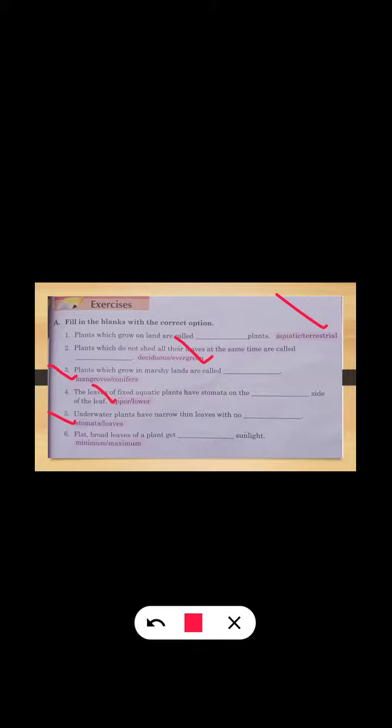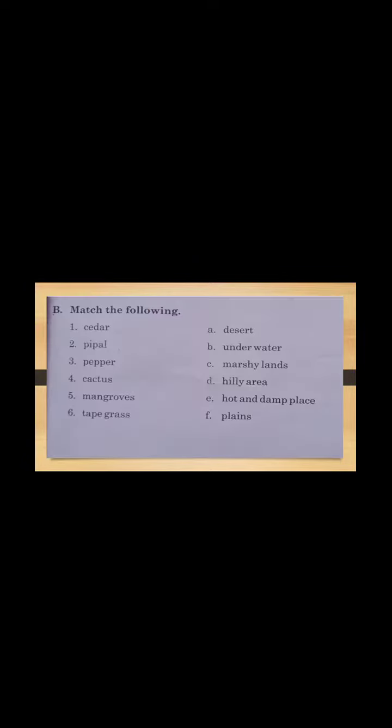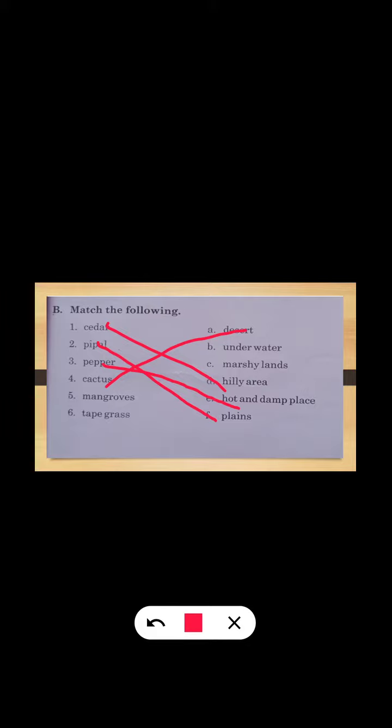Now match the following. The first one is deodar, so we will match it with the hilly areas. Second one is peepal - we will match it with the plains. Then pepper - we will match it with the hot and damp places. Cactus, fourth one, so we will match it with desert. Mangroves - we will match it with marshy lands. And the sixth one is tape grass - we will match tape grass with underwater.